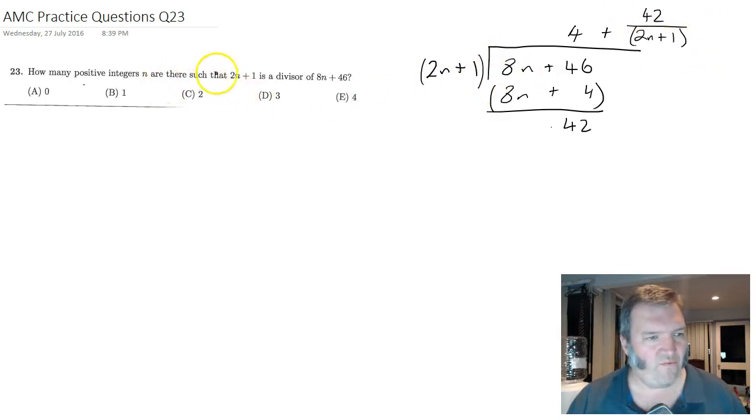So, if I want this to be a divisor, this number 42 divided by 2n plus 1 must be an integer. Okay, well what numbers divide 42?